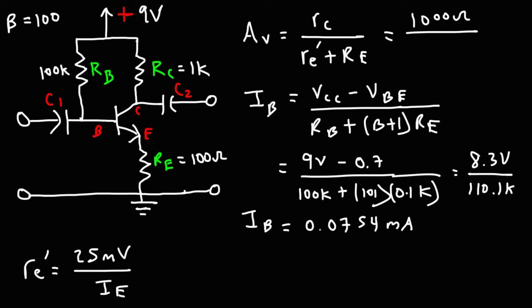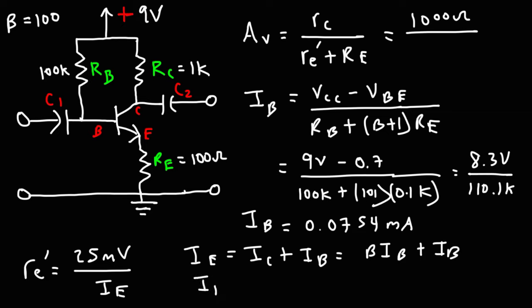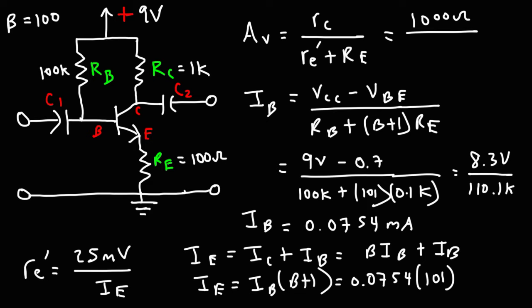There are many ways to calculate IE given IB. IE is the sum of IC and IB, and IC is beta times IB. So if you factor out IB, IE equals IB times (beta plus 1). That's 0.0754 milliamps times 101, which gives us IE of 7.615 milliamps.